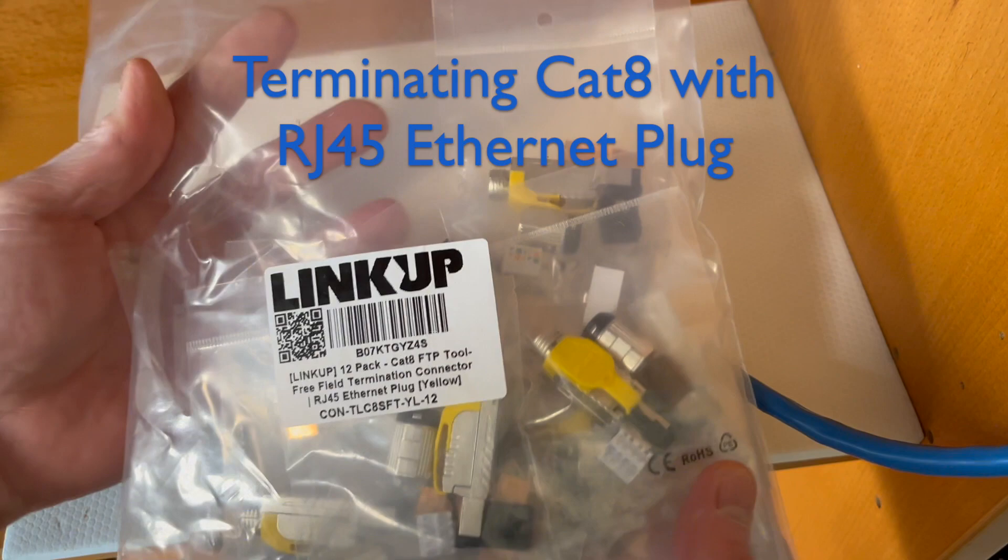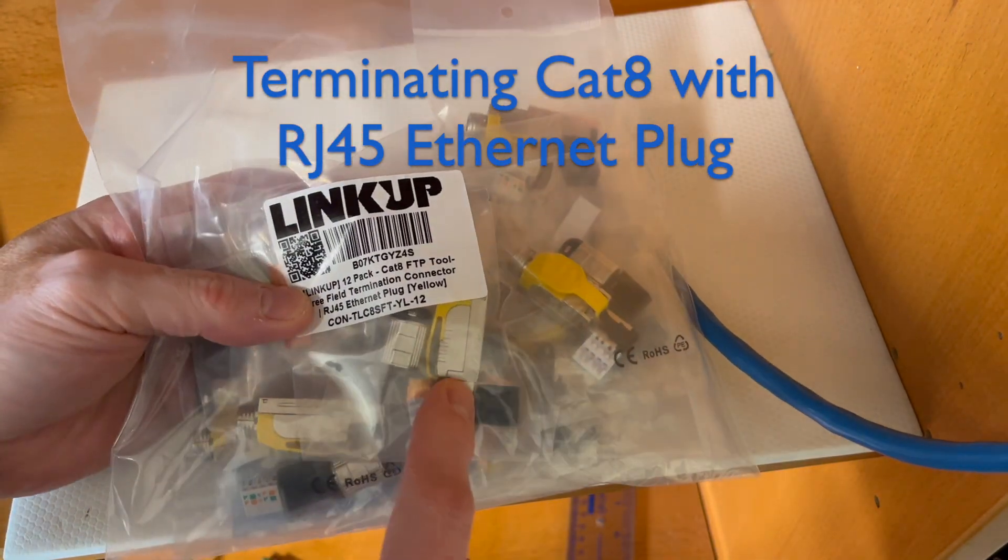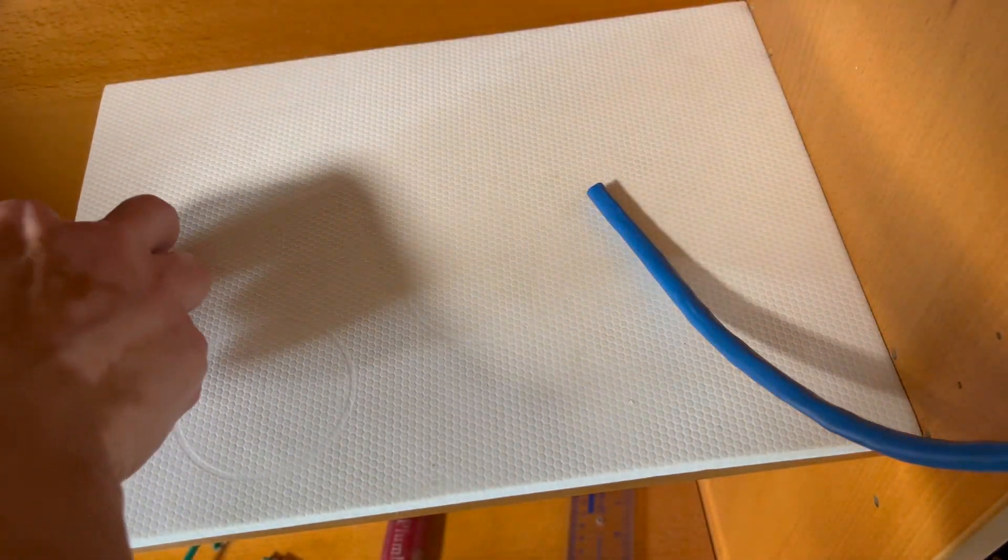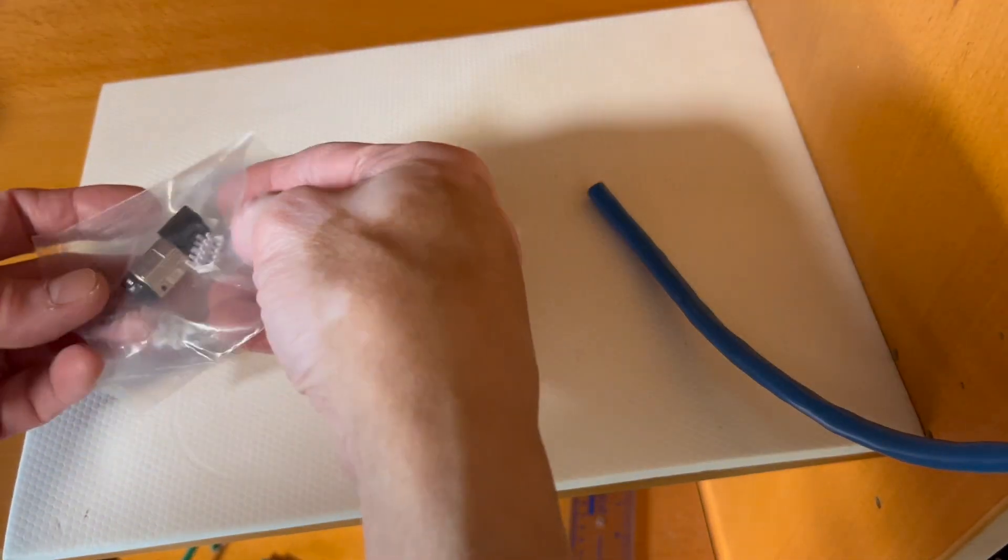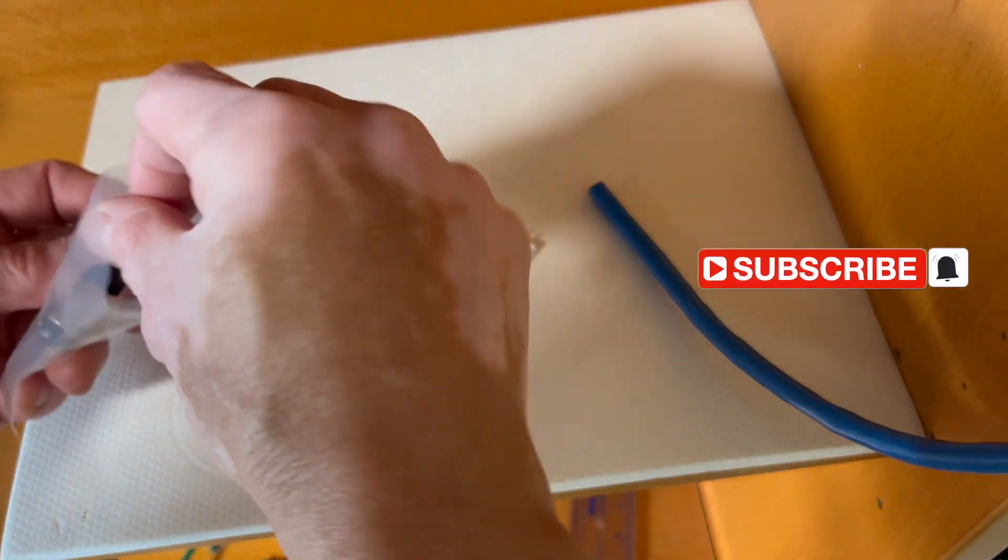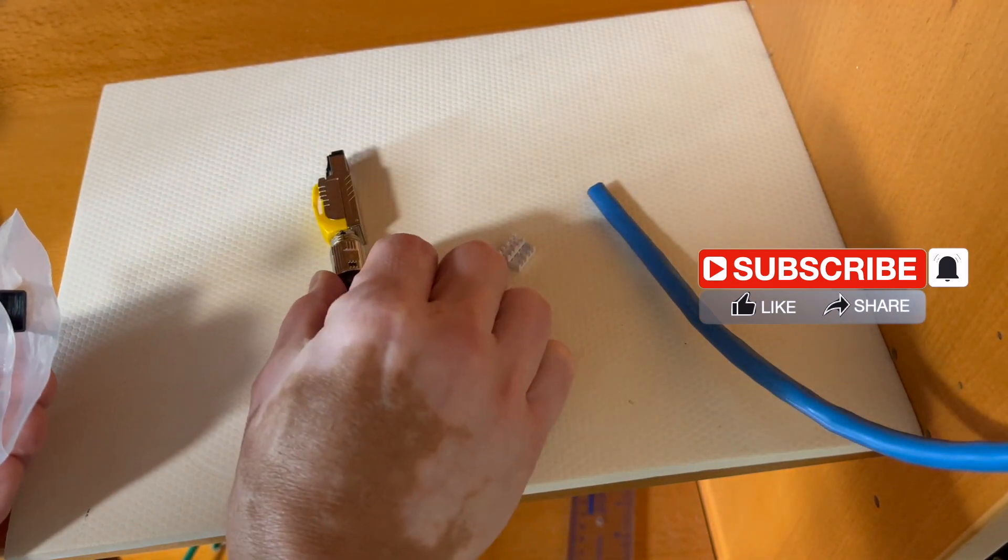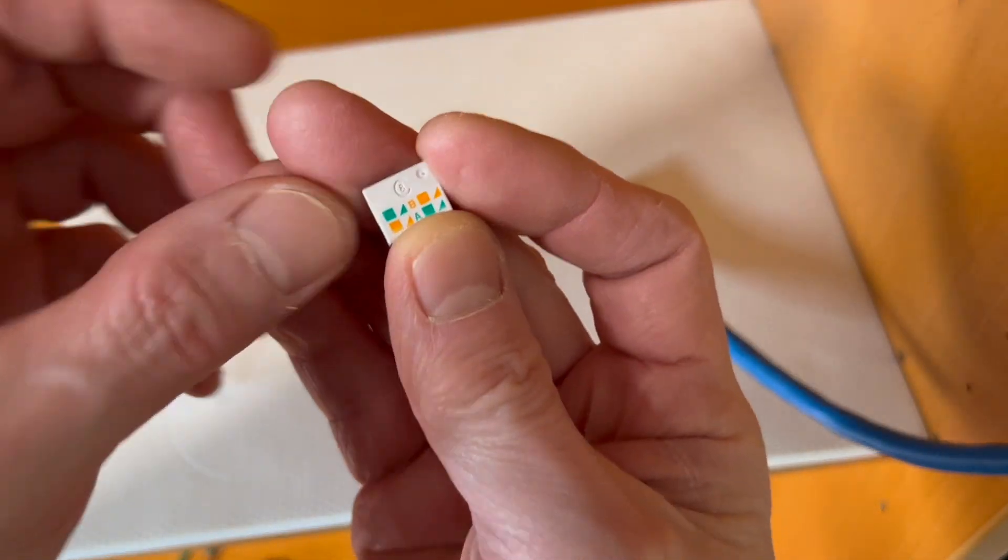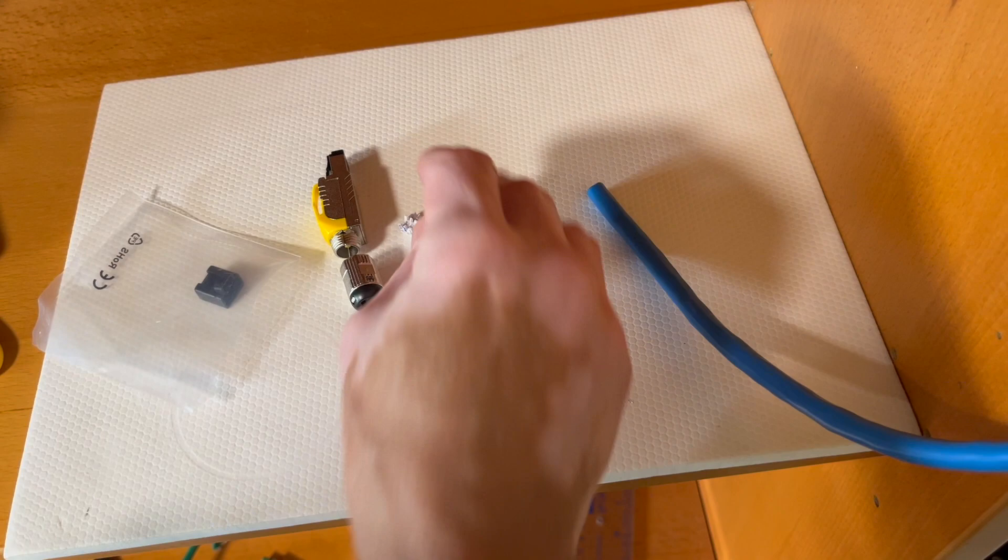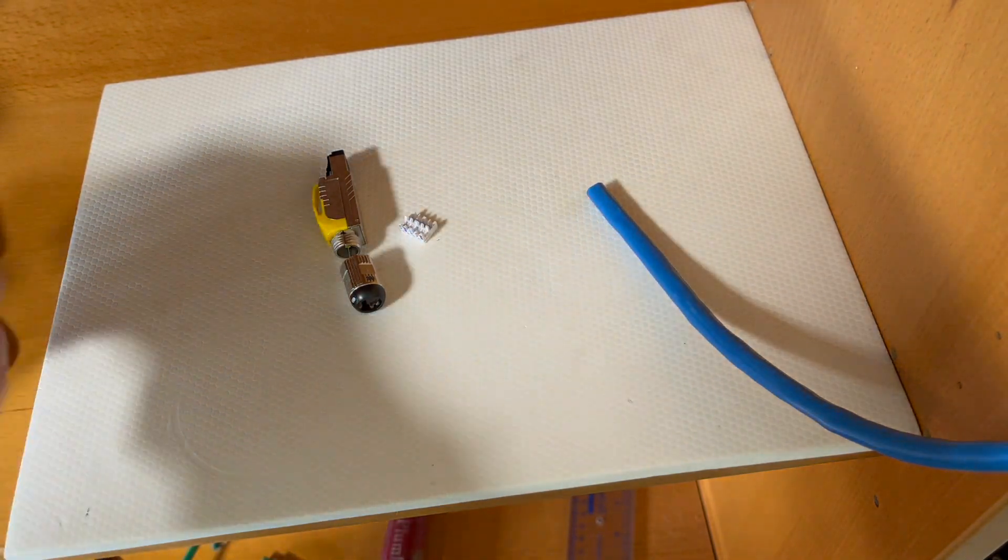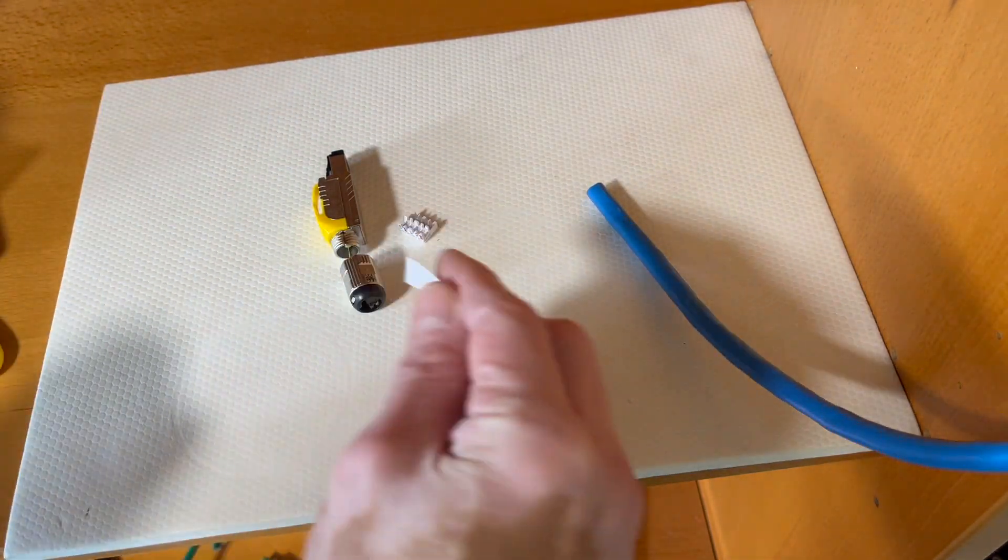This is by the way a 12 pack, cheaper to buy. I have lots of cable to terminate. It has this dust cover, we don't need this right now. This is the one that goes here. The guide shows we're gonna use type B because my wiring, the rest of my network, is all type B.